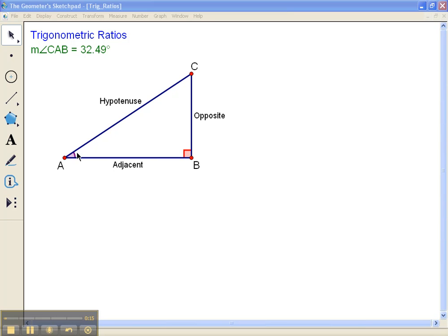Angle A is highlighted with a sector and across from angle A we call that the opposite side. The side that touches this angle that's not the hypotenuse is the adjacent side and of course the hypotenuse is across from the right angle.